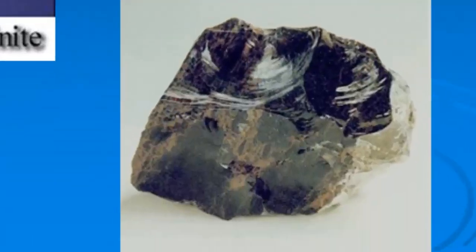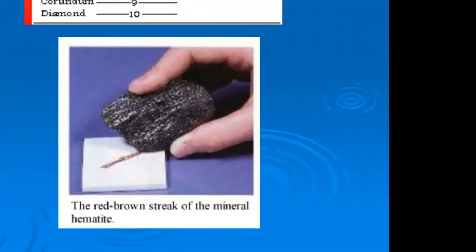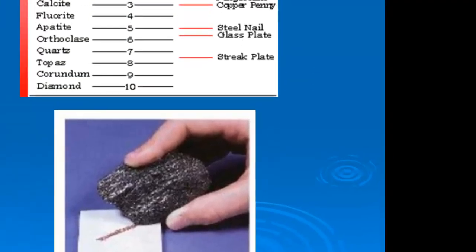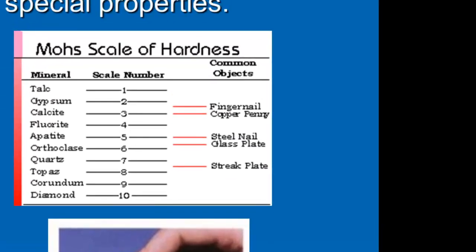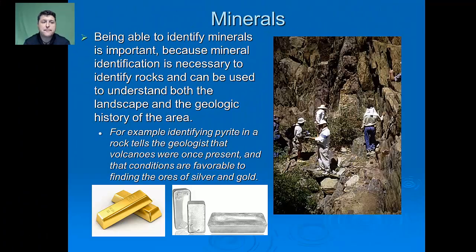We can also look at its crystalline structure — what kind of crystal shape does it form? What color does it produce when streaked upon a ceramic plate? What is its hardness on the Mohs hardness scale — what can it scratch and what scratches it? Being able to identify minerals is important because mineral identification is necessary to identify rocks.